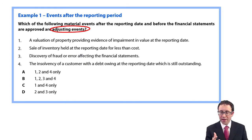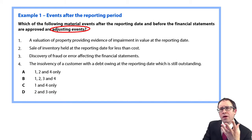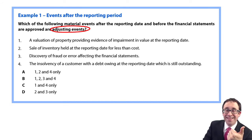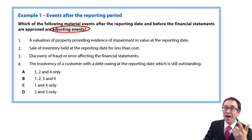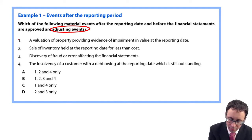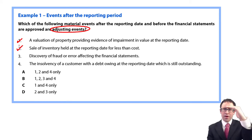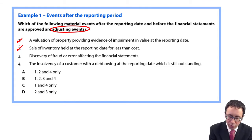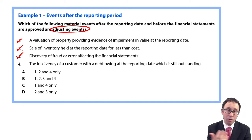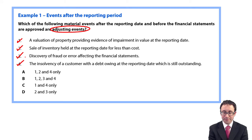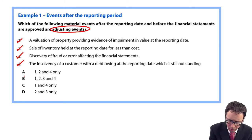The property has fallen in value, but this is given as extra evidence of the fact that it was impaired at the reporting date. Remember the process for an impairment: at the reporting date the impairment indicator was in existence; we just weren't able to get the information to perform the review at that date. We now have that information, so as the condition existed, this will be an adjusting event. The second situation — the sale of inventory held at the reporting date for less than cost, so NRV is now below cost — that's adjusting. Fraud or error — that's adjusting. And number four, the insolvency — that's adjusting as well. So all four are adjusting events.